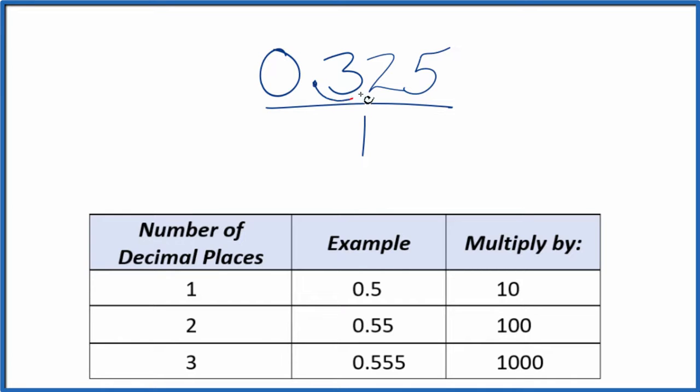I can see that there are 1, 2, 3 decimal places. When there are 3 decimal places, we're going to multiply that by 1,000. And that'll give us a whole number. So 1,000 times 0.325, that equals 325.